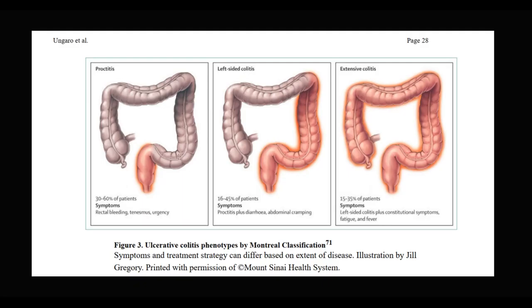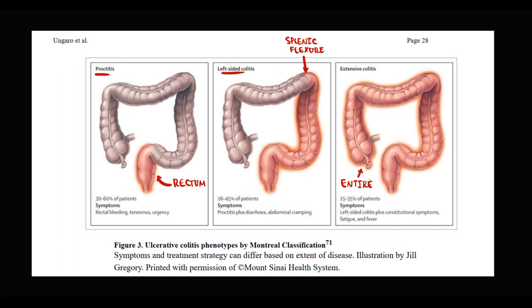The extension of inflammation differs from person to person, so we subclassify ulcerative colitis into three major types based on the affected area. If only the rectum is affected, we call this ulcerative proctitis. If inflammation also spreads up to the splenic flexure, we call this left-sided ulcerative colitis. If inflammation spreads from the splenic flexure to more proximal regions, we call this extensive ulcerative colitis — when the entire colon is affected, we also call it pancolitis. These are the three major subtypes according to the Montreal classification.